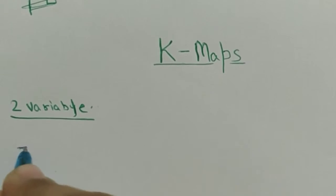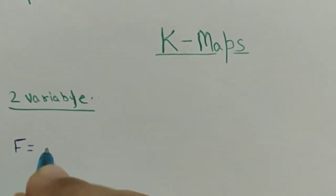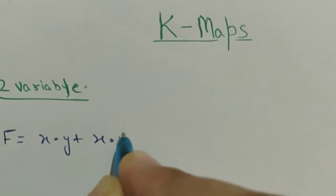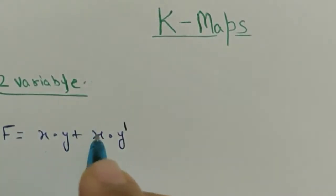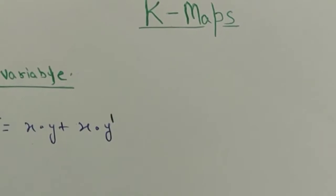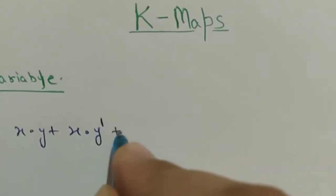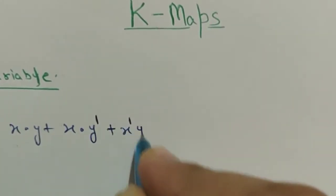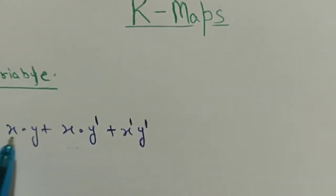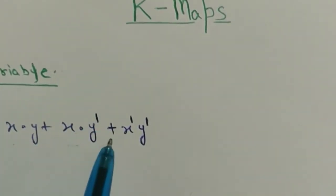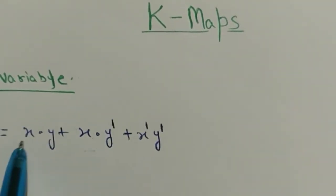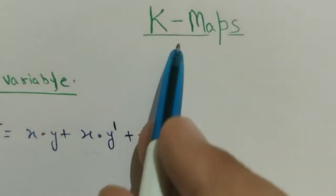Suppose I have a boolean function f is equal to x dot y plus x dot y dash plus x dash dot y dash. Now you have to simplify this boolean function using K-map.